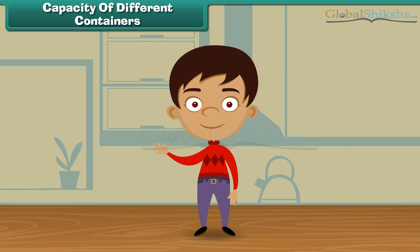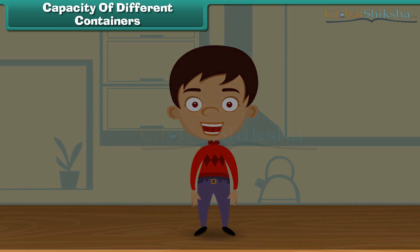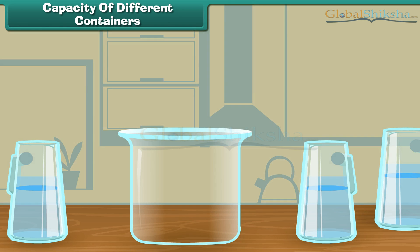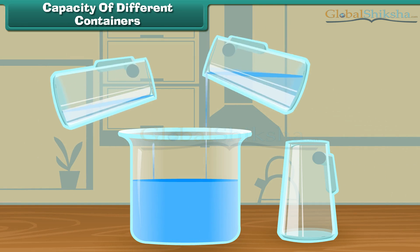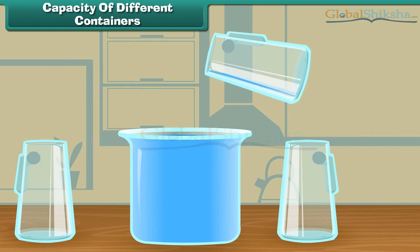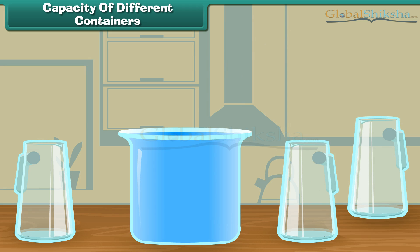Let us do another activity. We have three different vessels and a jug. Here we will fill water from the jug in these three vessels. Let us start with the first vessel. One, two, and three. Here we see that three jugs of water fill the first vessel.